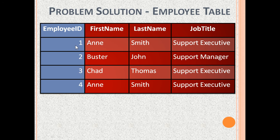So this Annie Smith, who is a support executive, has an employee ID of 1. And this Annie Smith, who is a support executive, has an employee ID of 4.